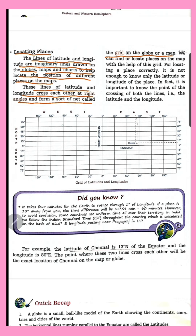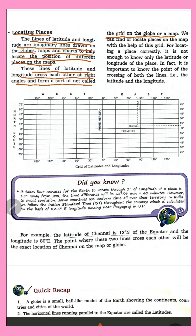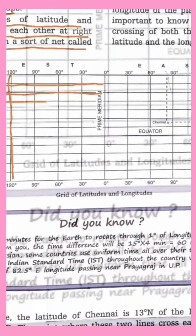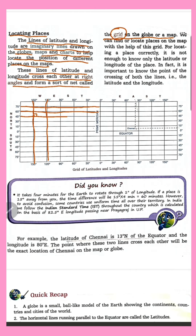As shown in the picture, the horizontal lines are latitude and the lines running from top to bottom are longitude. Where they cut each other, a point is formed and a right angle — a 90° angle — is created. Together they form a net-like structure which we call a grid.